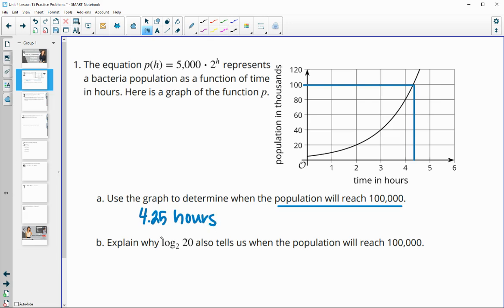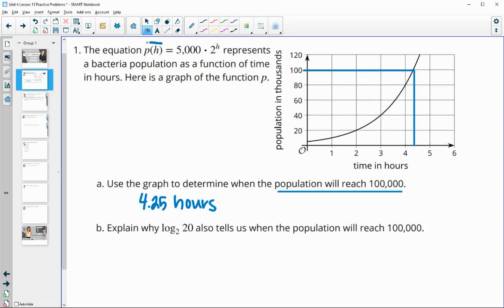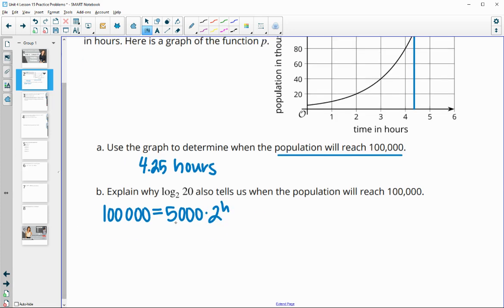Then this wants us to explain why the log base 2 of 20 also tells us when the population will reach 100,000. So if we were to actually plug that in here at 100,000, we know that we want to know when it's going to equal 100,000. And then set that equal to this function, which is 5,000 times 2 to the H.